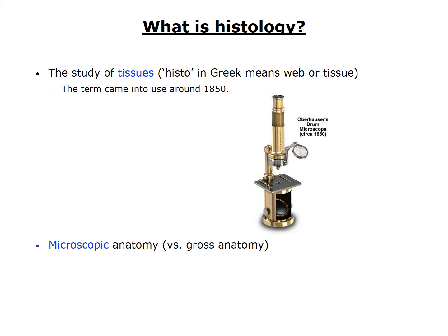Perhaps a more useful definition of histology is that it is microscopic anatomy — the study of the body's structures using the microscope, in contrast to gross anatomy, which uses only the unaided eye to examine structure. Today, microscopy includes many tools, such as the electron microscope, but this introduction will only consider some basics of light microscopy.